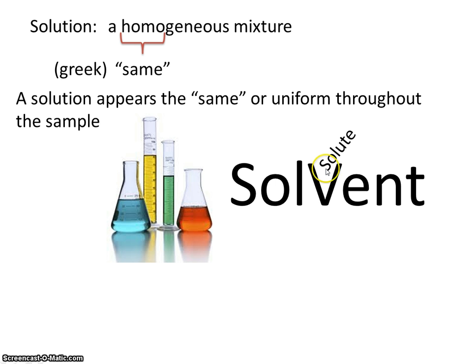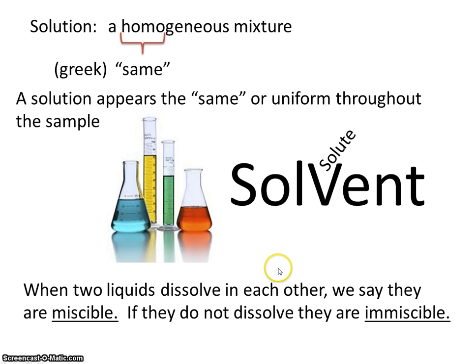If a solid is soluble in water, it will dissolve. If it doesn't dissolve, it's called insoluble. We also have a term that describes if two liquids will dissolve in each other — the word is miscible. When two liquids dissolve in each other, we say they are miscible. If they do not dissolve, we say they are immiscible.